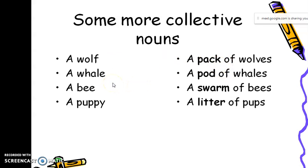Whale is single. Pod, pod of whales. Bee is single, but group of bees is swarm, swarm of bees. Puppy is one, we call it litter, litter of pups.